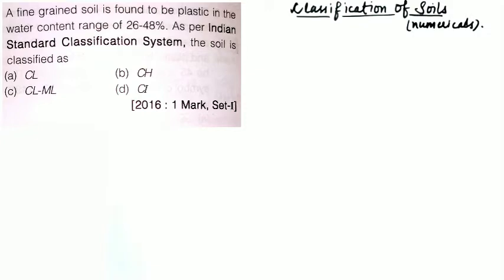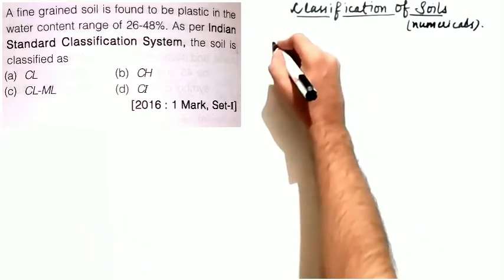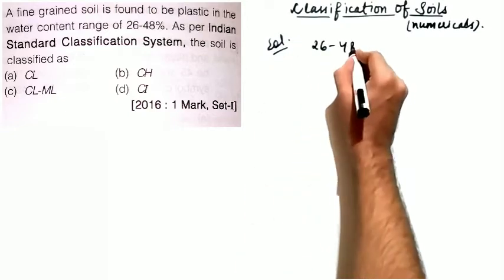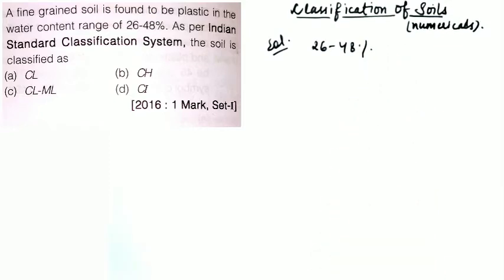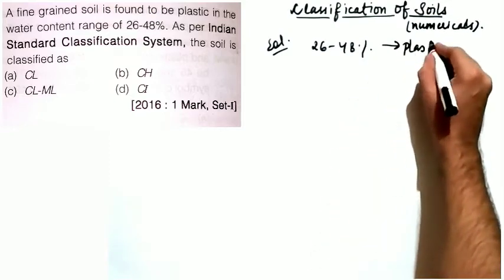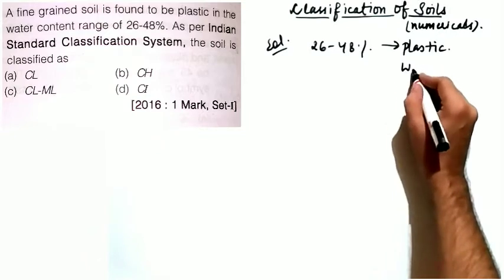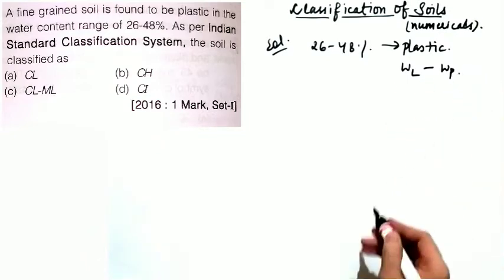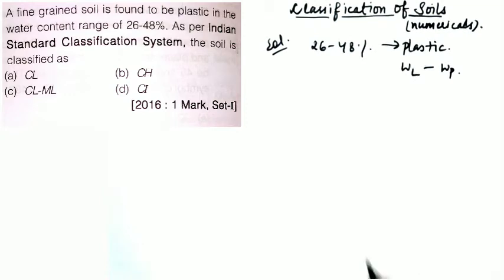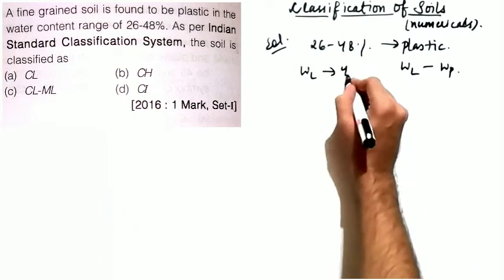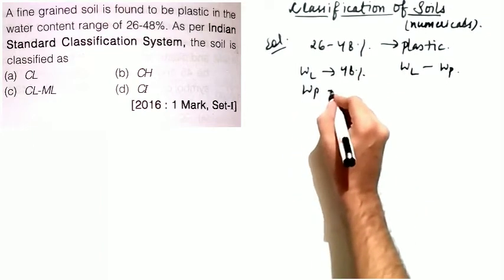The first question says that a fine-grained soil is found to be plastic in the water content range of 26 to 48 percent. As per the ISC system, the soil is to be classified. The soil is plastic in the plasticity zone, which lies between the liquid limit and plastic limit. Since liquid limit is always greater than plastic limit, the liquid limit is 48% and the plastic limit is 26%.